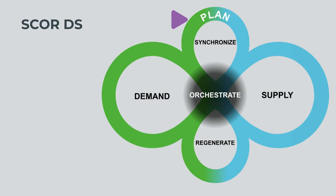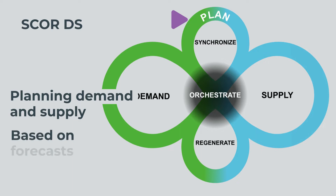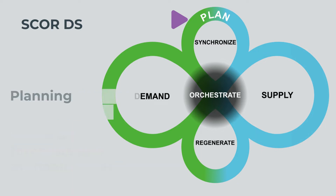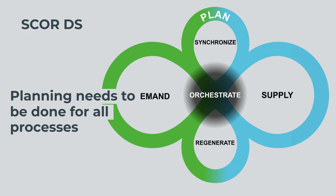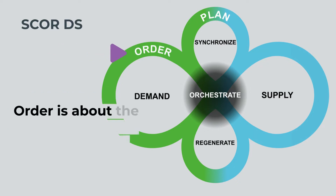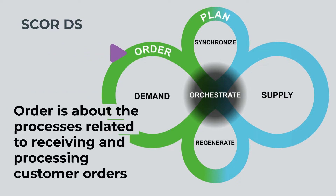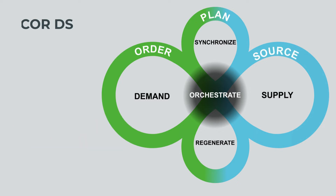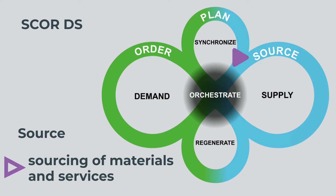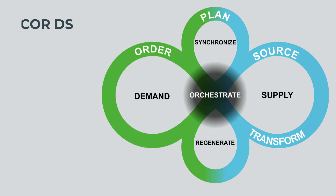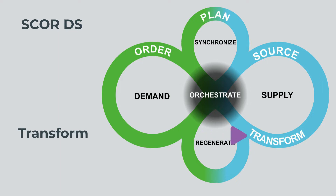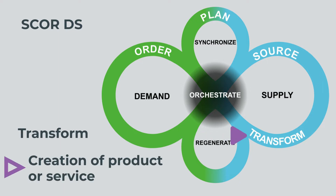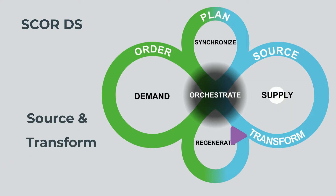PLAN, at the top, is about planning demand and supply based on forecasts and available capacity. Planning needs to be done for all the other processes. ORDER is about the processes related to receiving and processing customer orders. SOURCE describes all processes related to the sourcing of raw materials, components, or services needed to fulfill the order. TRANSFORM is the part where companies create products and/or services. SOURCE and TRANSFORM represent the supply side of the horizontal infinity loop.